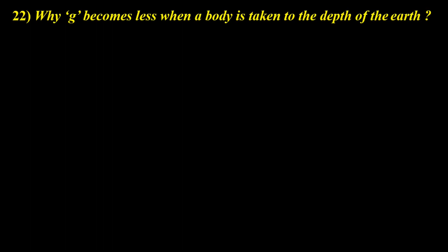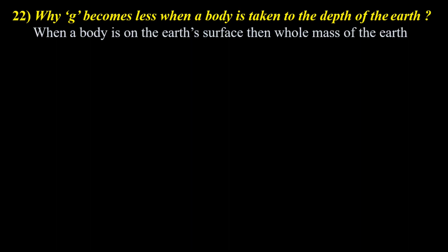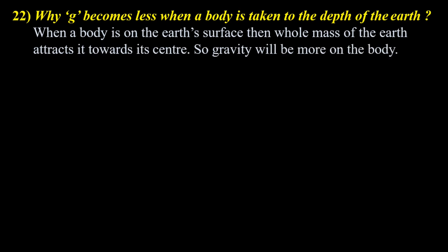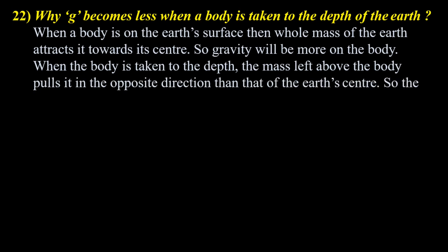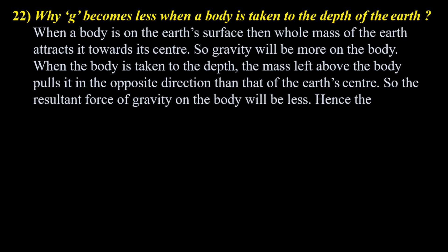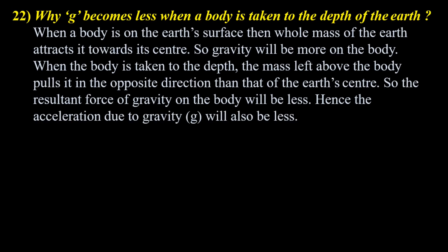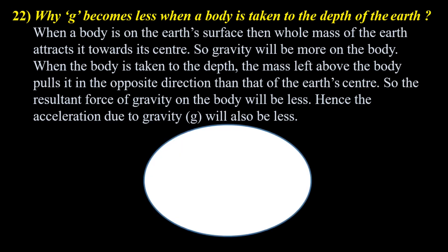Why does g become less when a body is taken to the depth of the Earth? When a body is on the Earth's surface, the whole mass of the Earth attracts it towards its center, so gravity will be more on the body. When the body is taken to the depth, the mass left above the body pulls it in the opposite direction to that of the Earth's center, so the resultant force of gravity on the body will be less. Hence, acceleration due to gravity, small g, will also be less.